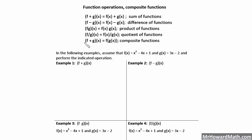These two notations are interchangeable and both are read f of g of x. This is the composite function — a very important one you're going to see a lot. It means you evaluate g of x and take that result and plug it back into your f of x function. You evaluate g of x for whatever value you're given, then plug that in as the x value for your f of x function, and that result is your final answer.